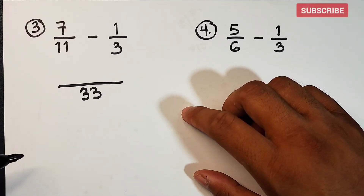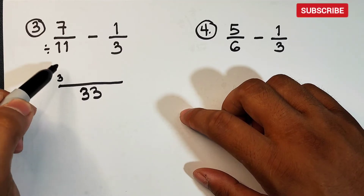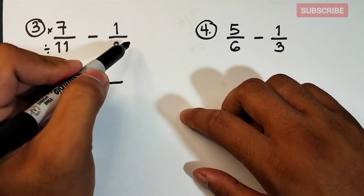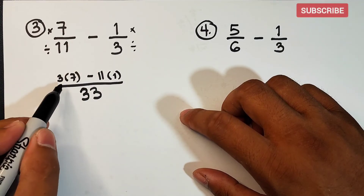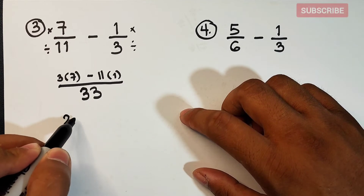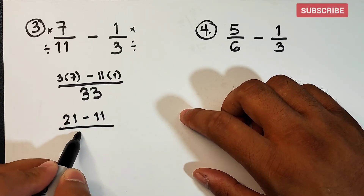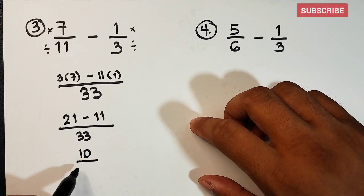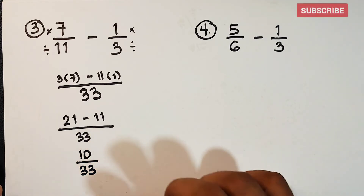So 33 divided by 11 is 3, times 7; and then minus 33 divided by 3, which is 11, times 1. So 3 times 7 is 21, minus 11, which equals 10 over 33. Please double-check if your answer can be simplified — in this case, 10 over 33 is already in simplified form.